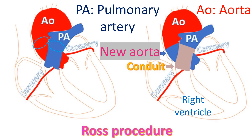This is called a pulmonary autograft for the aortic position. The pulmonary valve is the valve between the right ventricle and pulmonary artery. The right ventricle is the lower muscular chamber of the heart which pumps blood to the lungs for oxygenation, and the pulmonary artery takes this blood to the lungs.